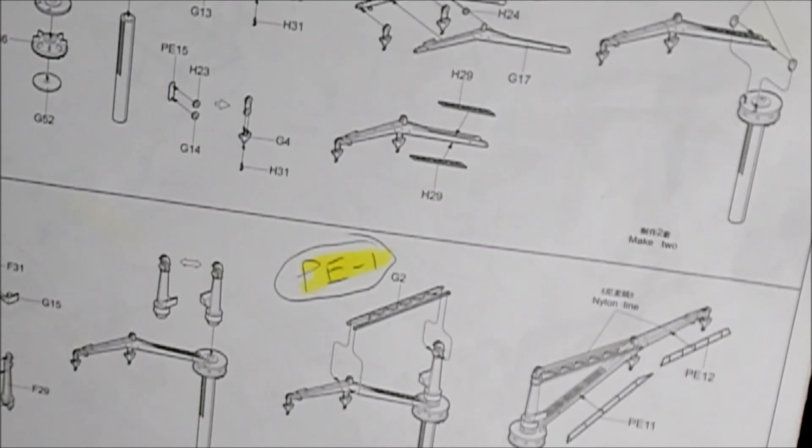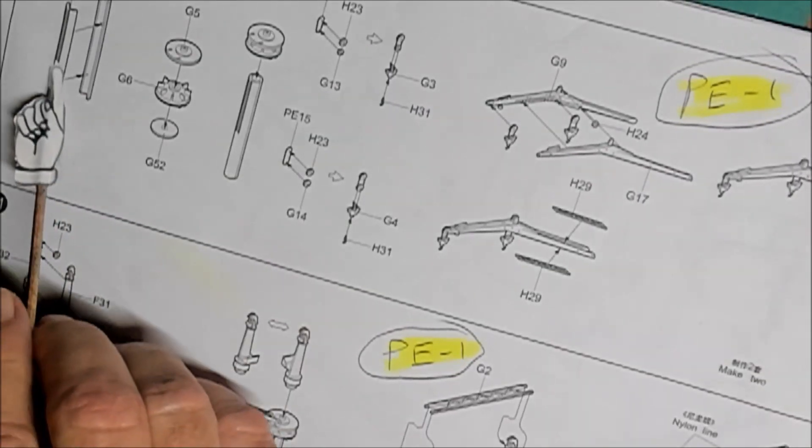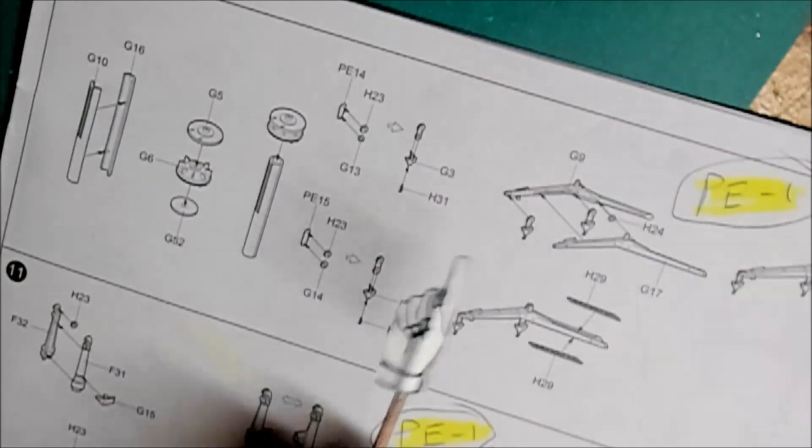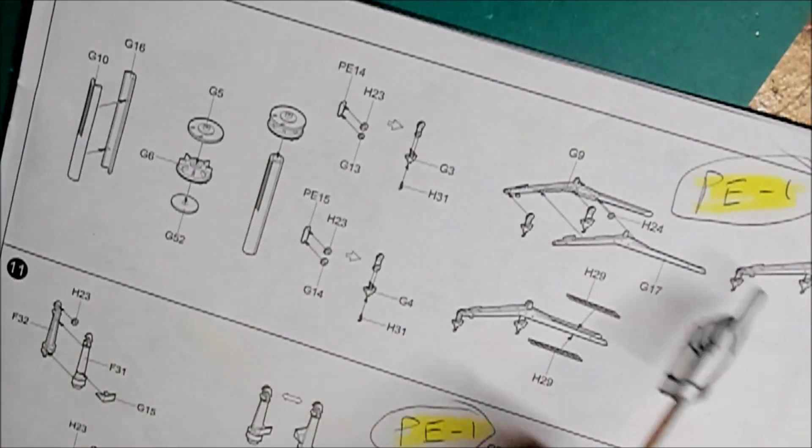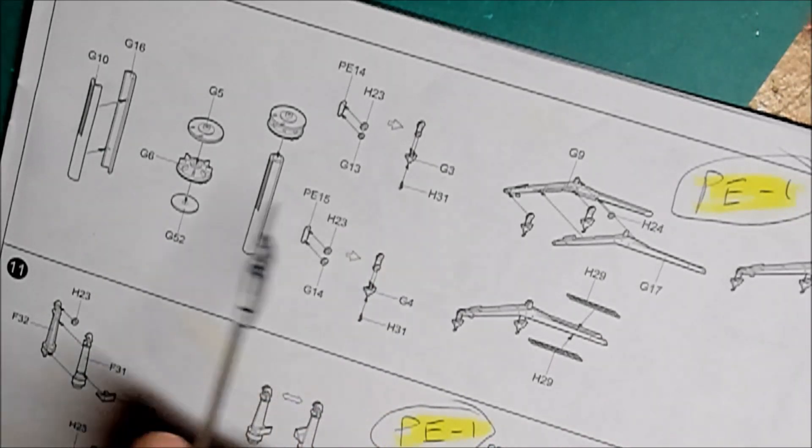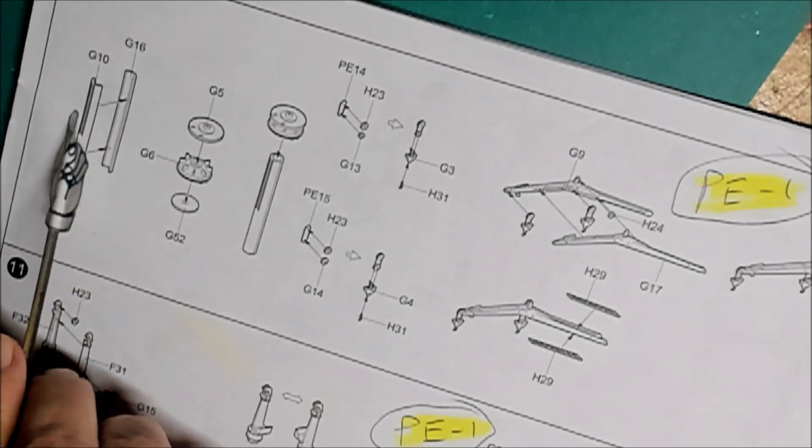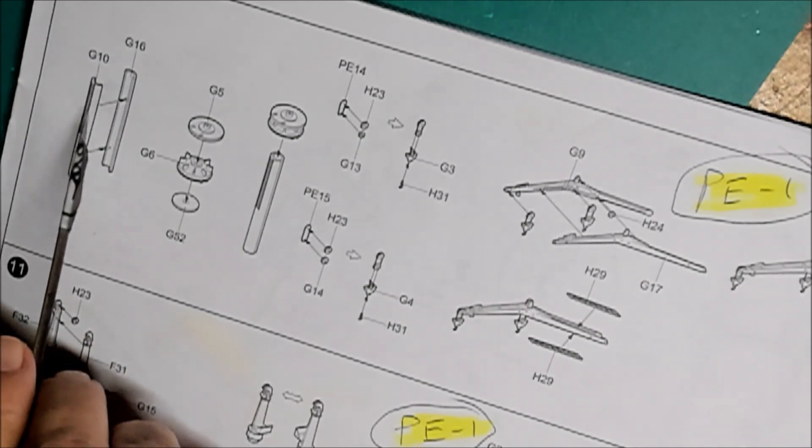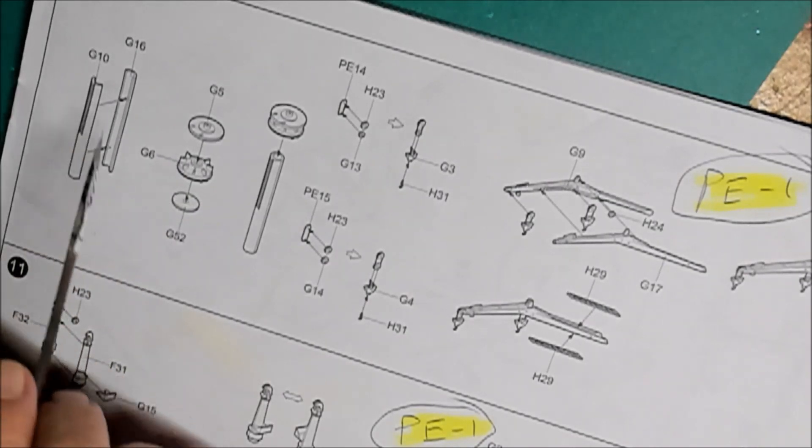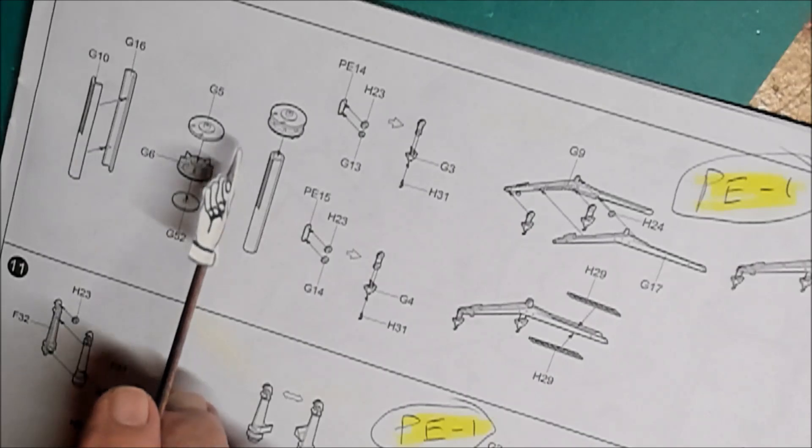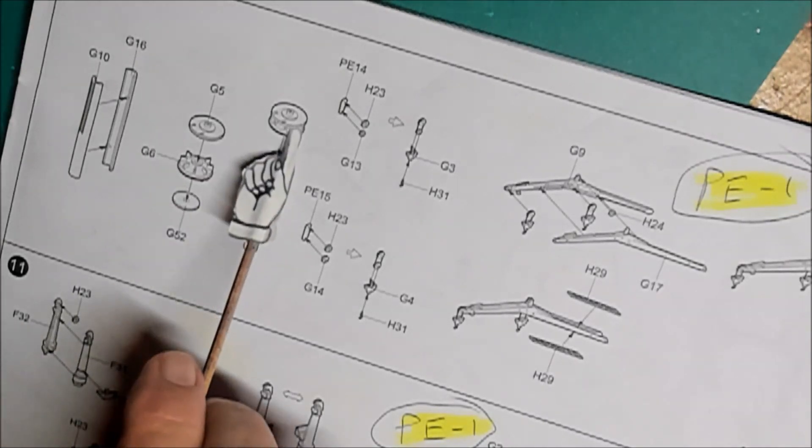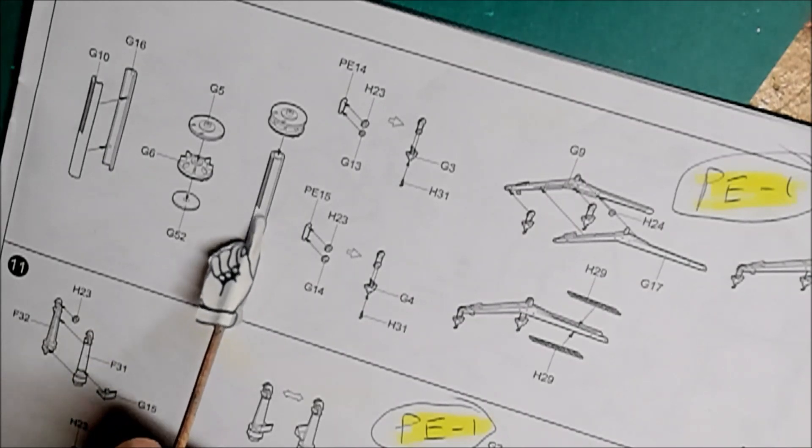Basically pretty simple. You take G10, G16 - those are going together. I didn't film any of this only because it's so simple, A goes into B type stuff. G10, G16, the ladders that are printed on to part G10 - we're going to sand those off because we have ladders from the Edwards that we're going to be replacing that with. This part here consists of three parts: G5, G6, and G52.